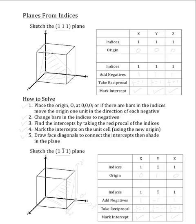Now for this top unit cell, we will be sketching the 1,1,1 plane. The first step in solving this is to choose the origin. Because there are no bars in the indices, the origin will remain at 0,0,0, which is right here.